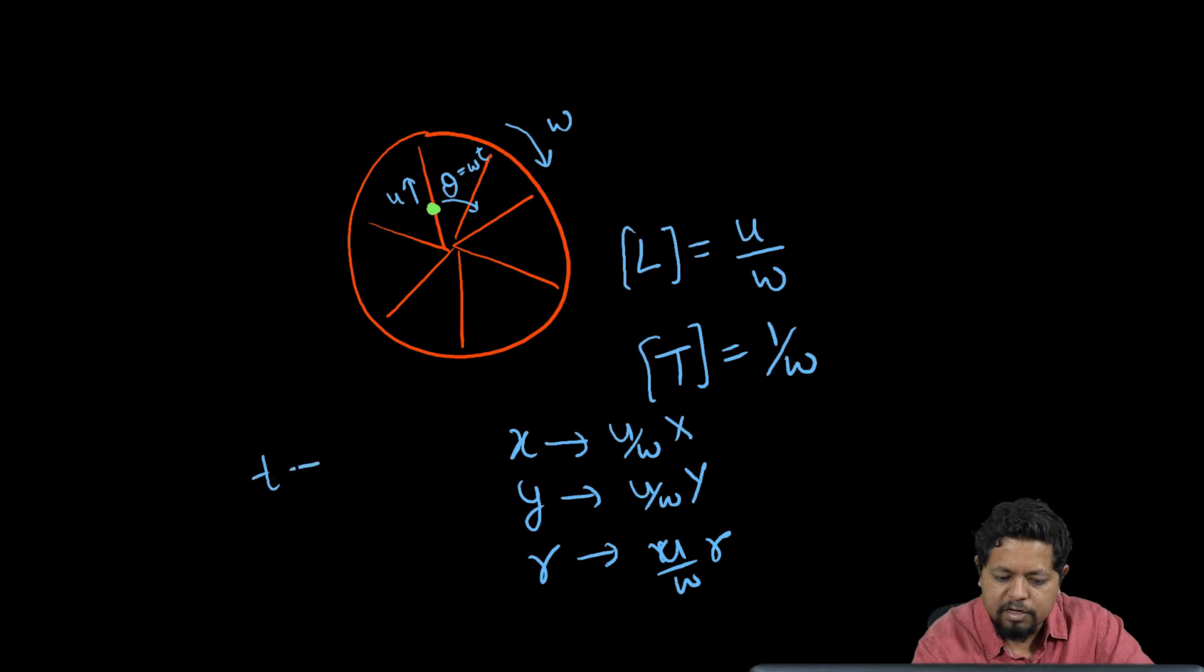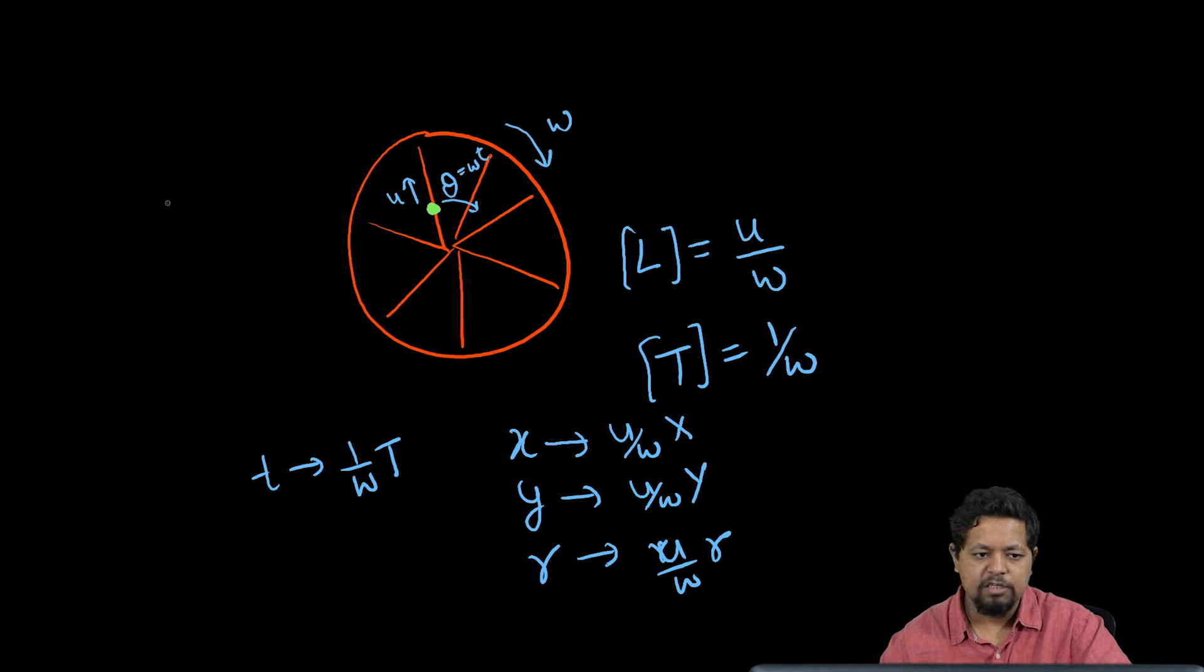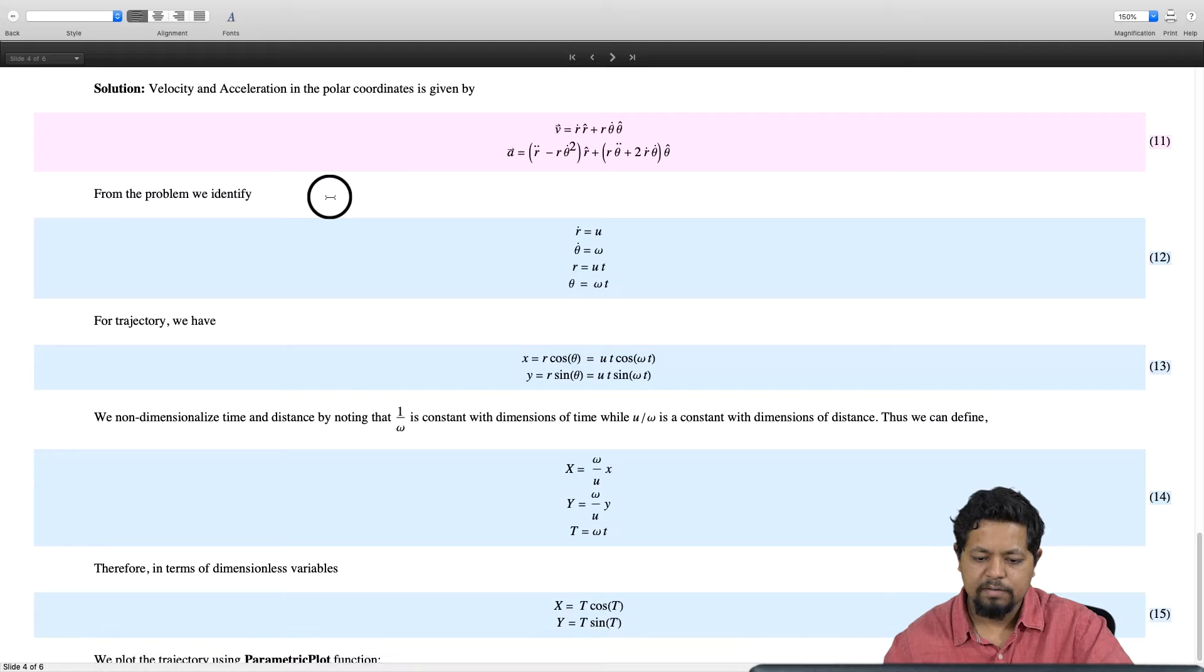Similarly, for time we can replace time by 1 over omega times t, and that replacement in the equations will give me x coordinate as omega by u times this replacement, or I can say big X coordinate is omega by u x, et cetera.